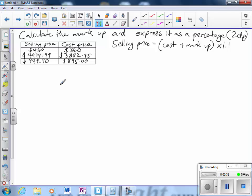I know that the selling price for example for the first one is $450 and that's equal to the cost price which is $360 plus markup which I'll just write as MU times 1.1.